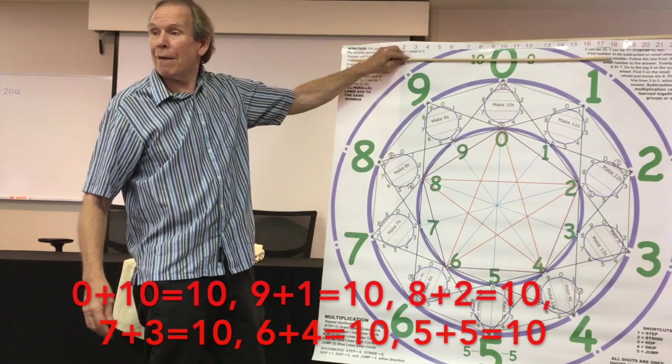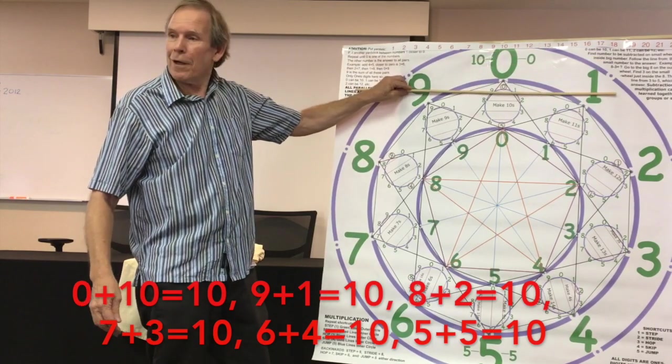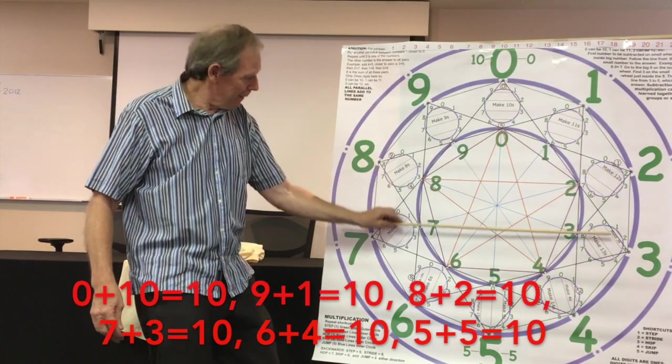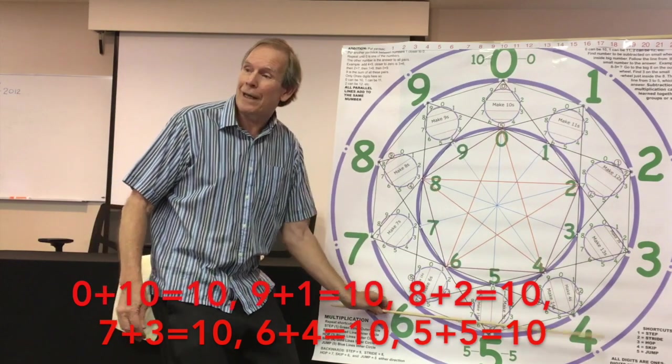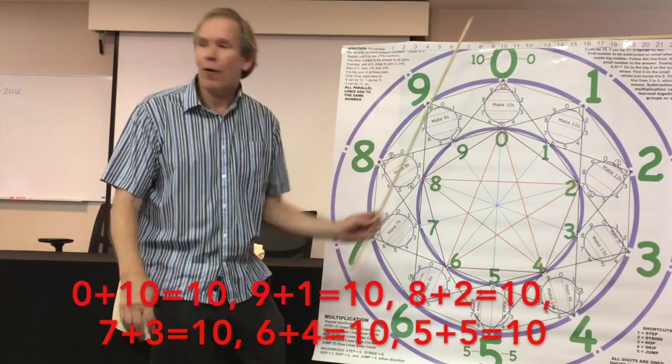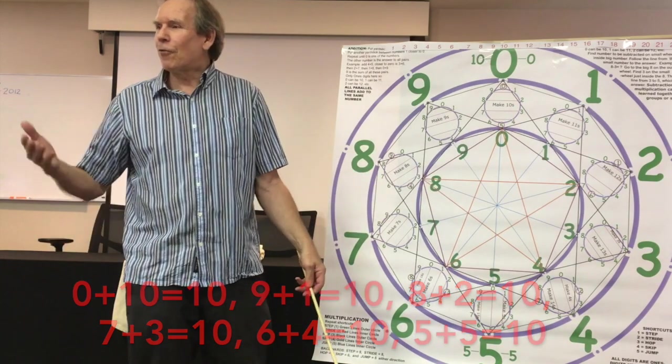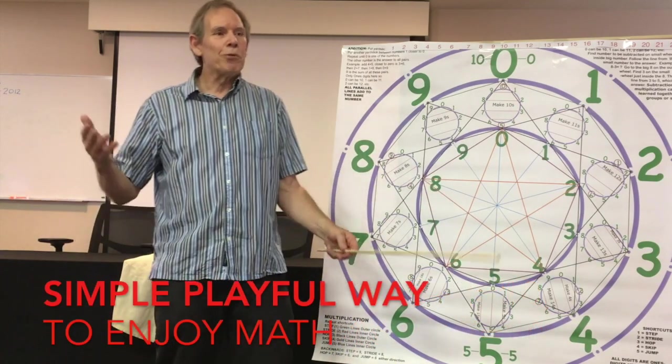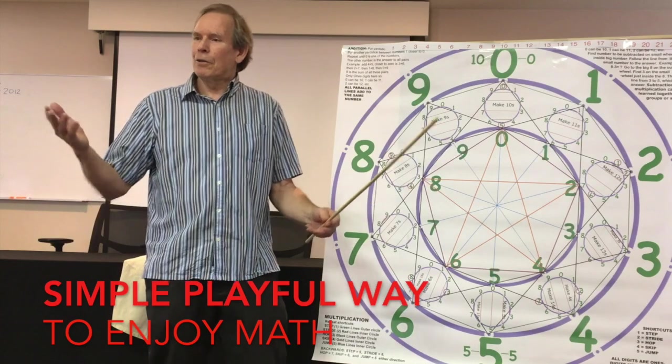You can go down. 0 and 10, 9 and 1 are 10, 8 and 2 are 10, 7 and 3 are 10, 6 and 4 are 10. 5 is all by itself, 5 and 5 are 10. It works for all numbers. It's a simple, straightforward, playful, fun way to learn math.